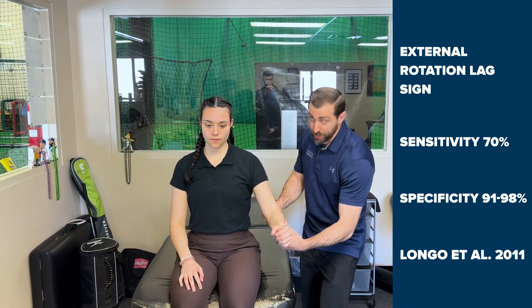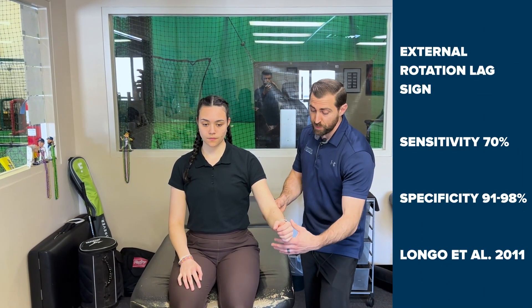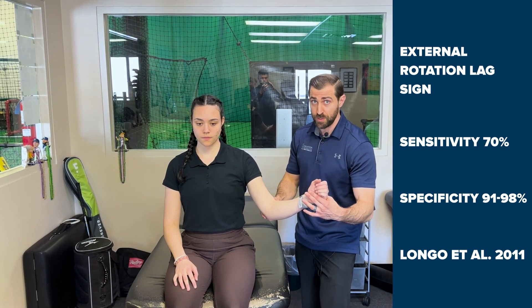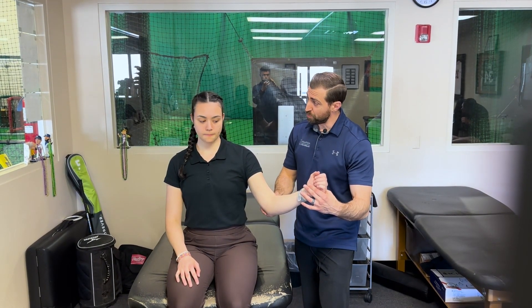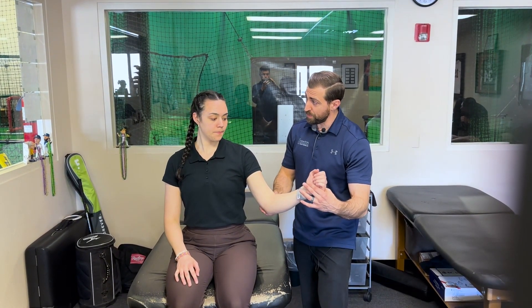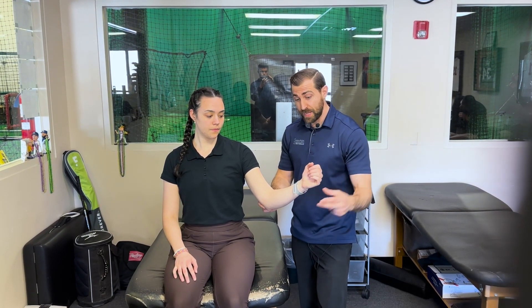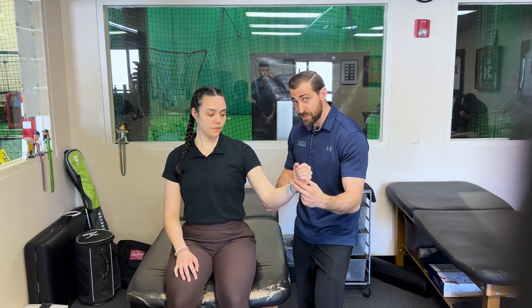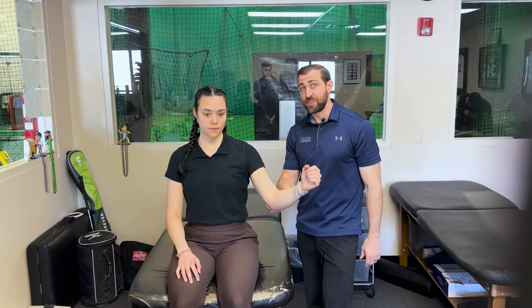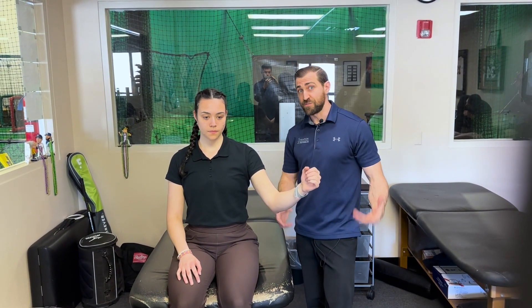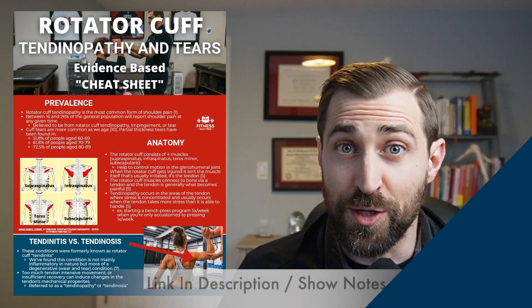External rotation lag sign: we're going to elevate the patient's shoulder 20 degrees, then maximally externally rotate the shoulder. From here, hold your arm in place and don't move at all. When I let go of the hand and wrist, if we notice the hand lags or drops forward slightly, that's a sign there may be a large full-thickness rotator cuff tear of the infraspinatus.